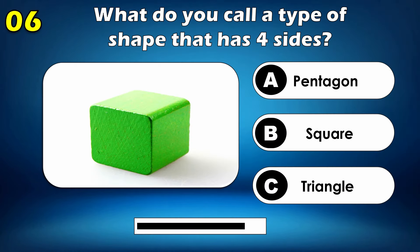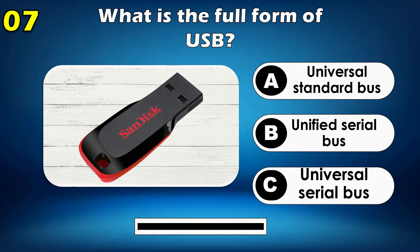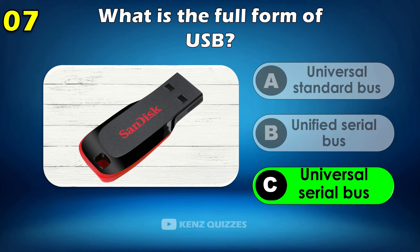What do you call a type of shape that has 4 sides? Square. What is the full form of USB? Universal Serial Bus.